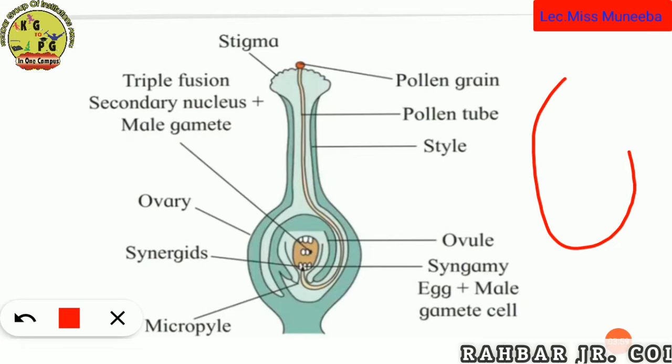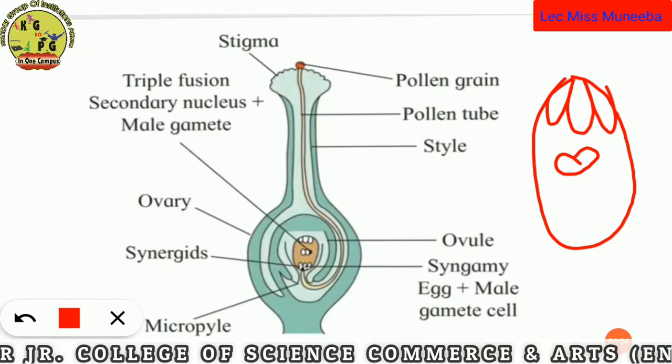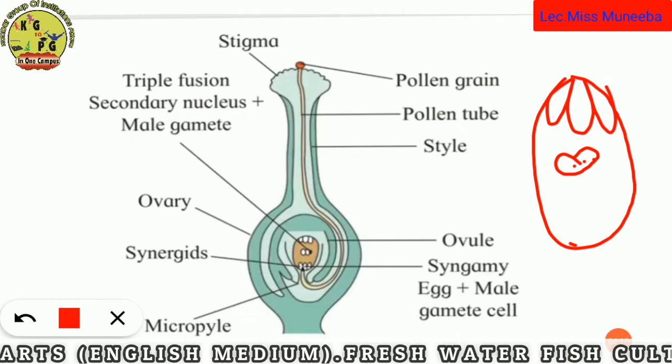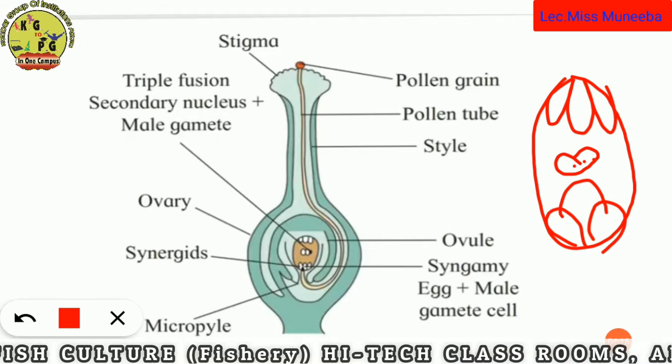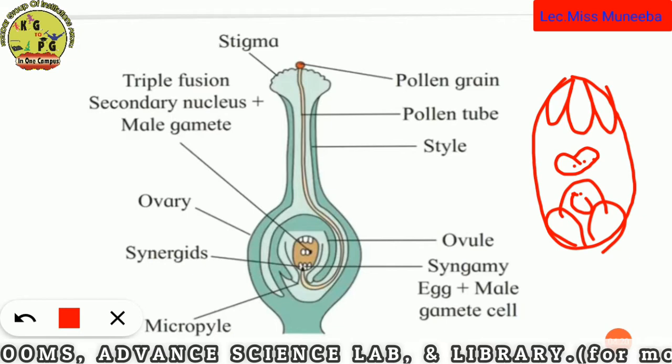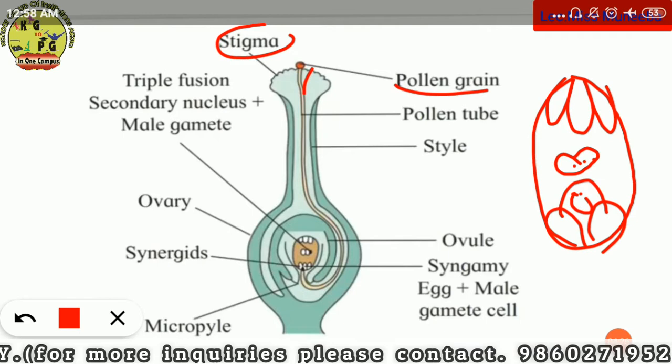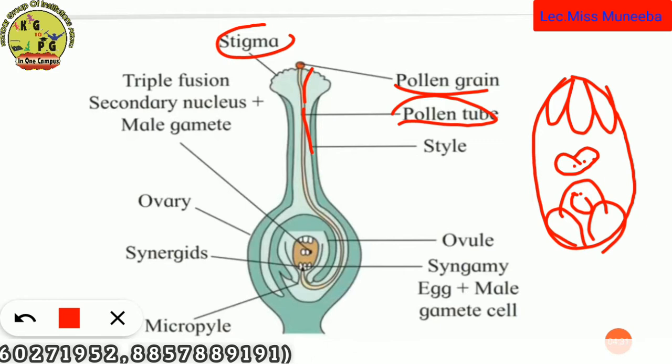Inside the embryo sac structure: at one end are antipodal cells, in the center there are two nuclei called the secondary nucleus, near the micropylar end there are three cells called synergids, and in the middle is the egg cell. This is the structure we have studied. The pollen grain lands on the stigma, forms a pollen tube through the style, and travels toward the ovule.